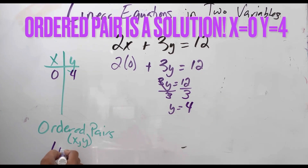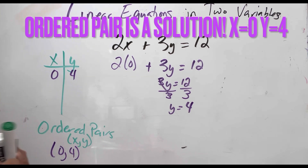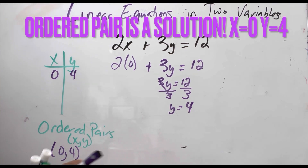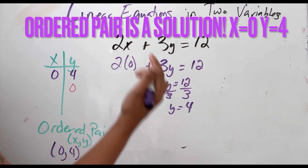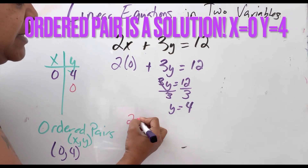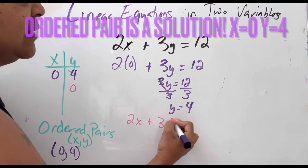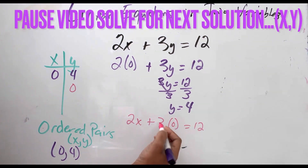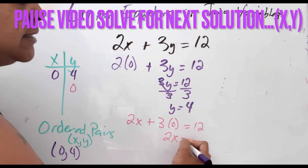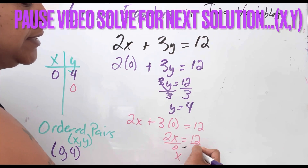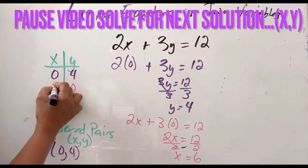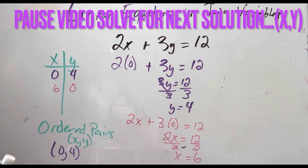So my first ordered pair is 0 comma 4. Now I'm going to substitute 0 for y. Using the same equation and substituting y equals 0, that gets rid of the y term, leaving 2x equals 12. Dividing both sides by 2, x equals 6. So 6 comma 0 is my other ordered pair.